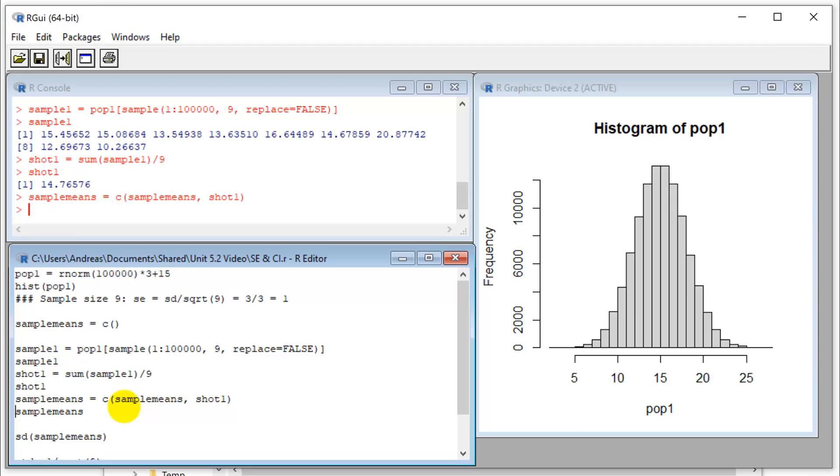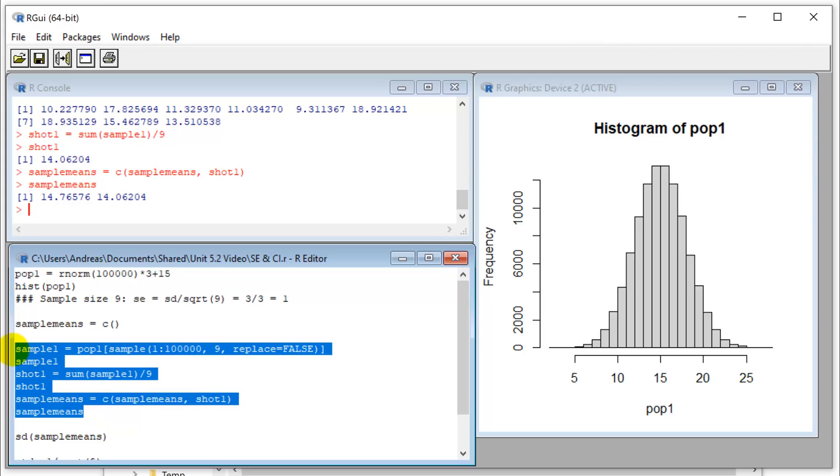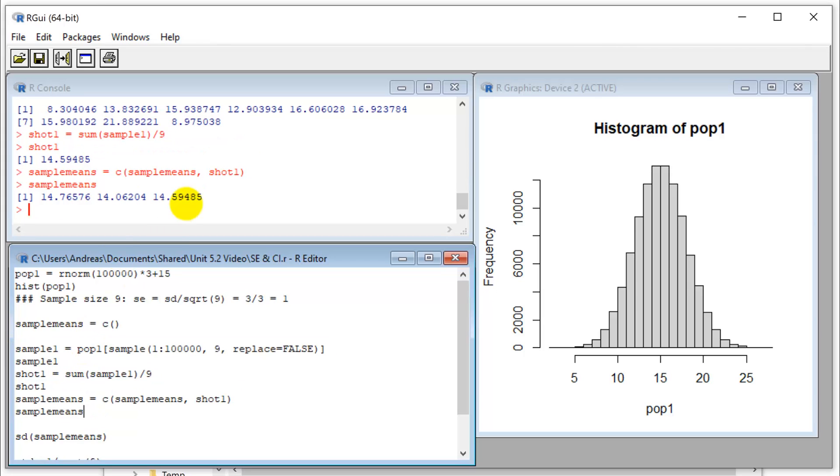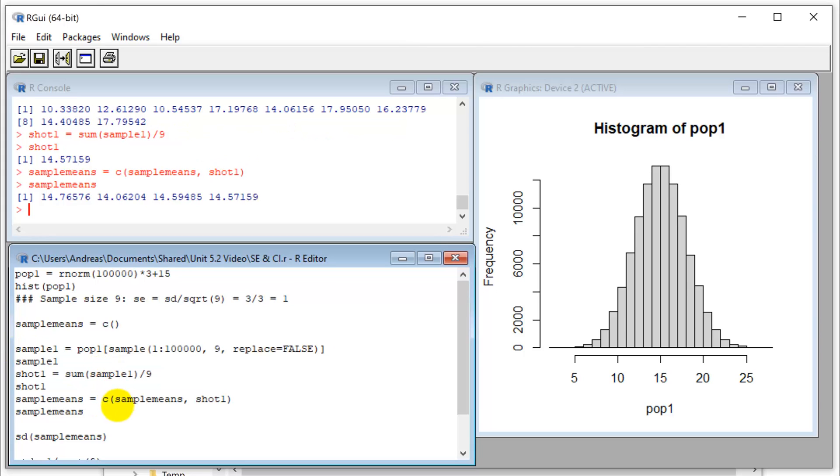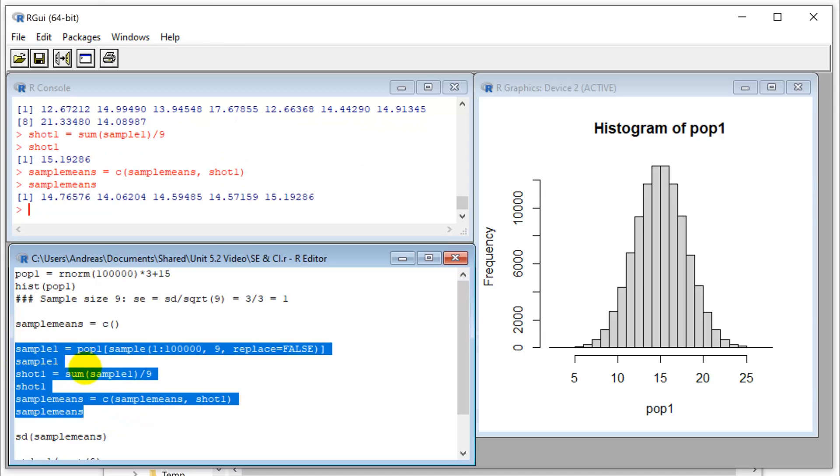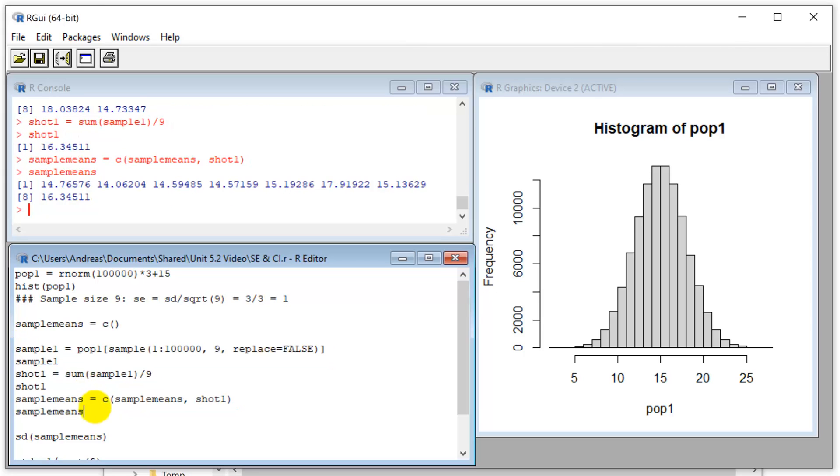And I'm going to add this sample to my sample means. So if I run this procedure again, that's my second one, 14. And another one, 14. So I seem to be consistently slightly below. There, now I'm above.